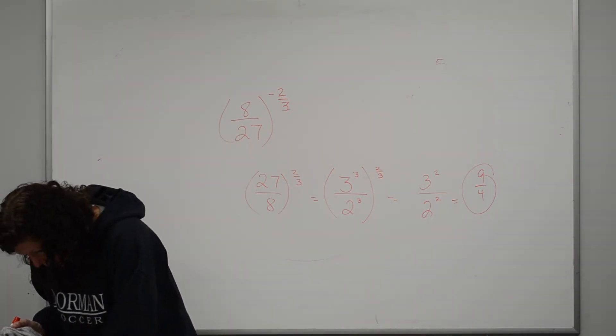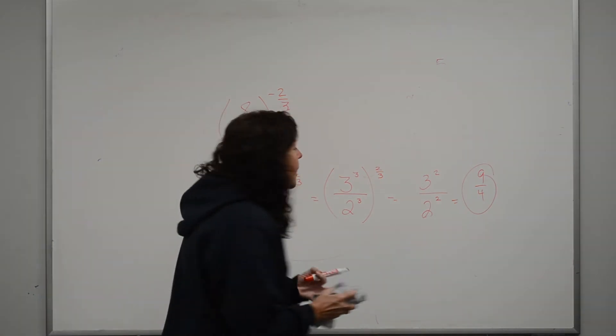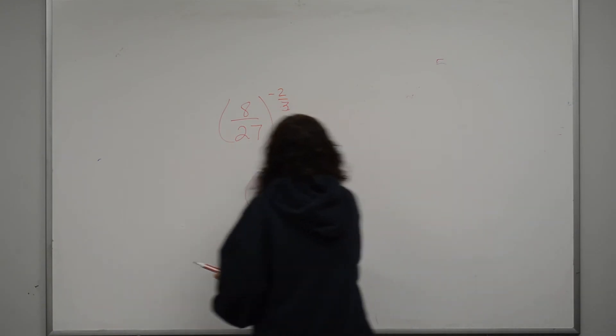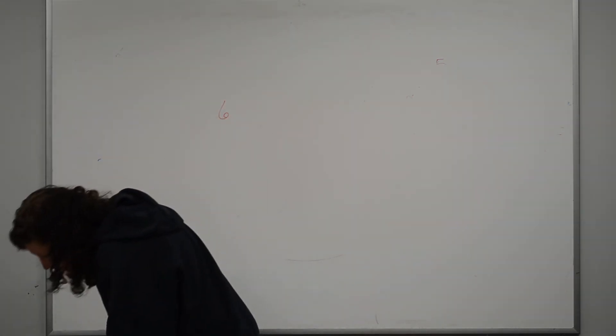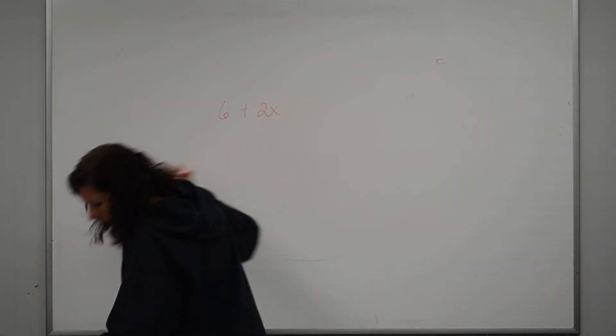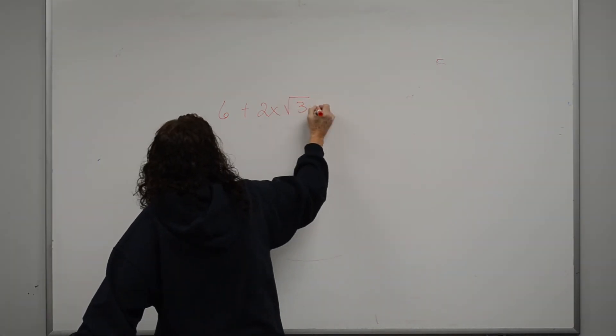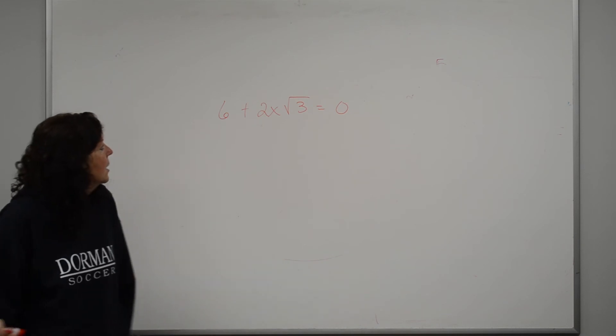That took me through section 5.7, section 5.8, we're almost there. Okay, was when we were solving using roots. Like, for instance, let's say I have 6 plus 2x on the square root of 3 equals 0. And it says solve for the x.